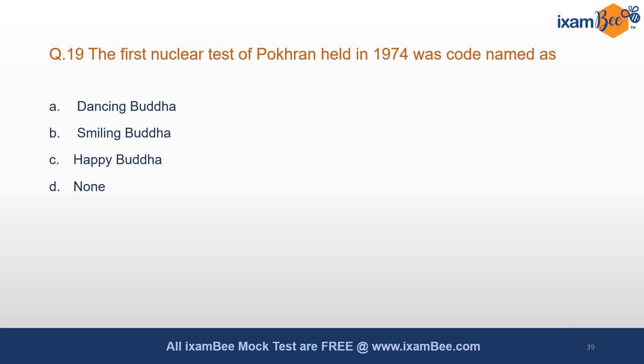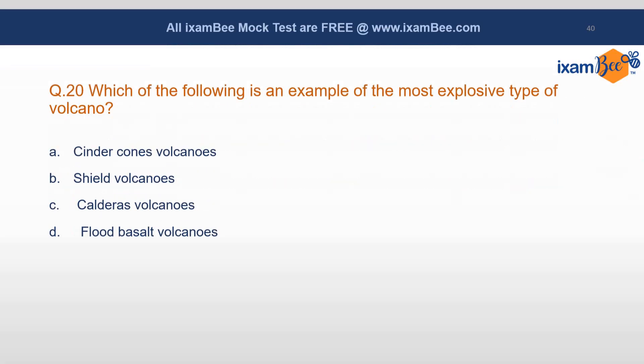The first nuclear test at Pokhran held in 1974 was codenamed what? The answer is Smiling Buddha. Pokhran, which is in Rajasthan, is very important. The test was conducted on 18th May 1974.